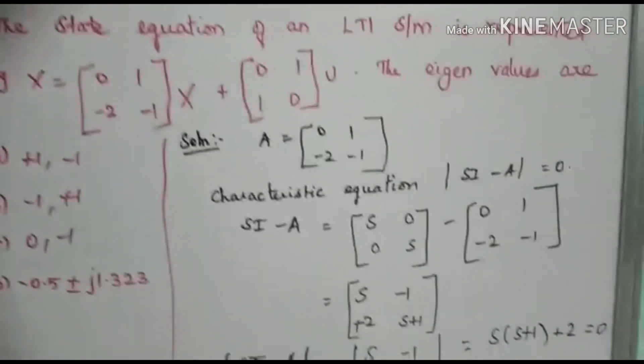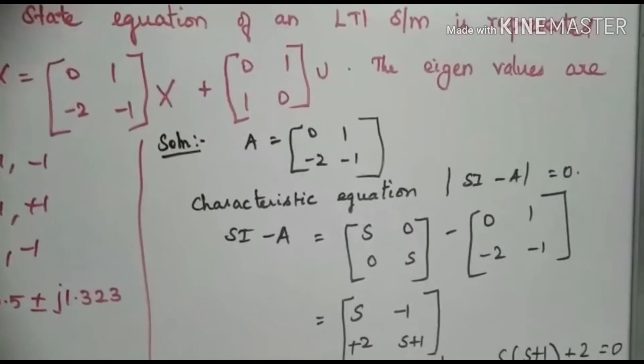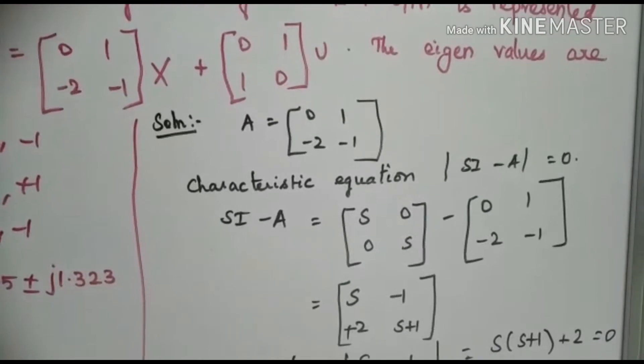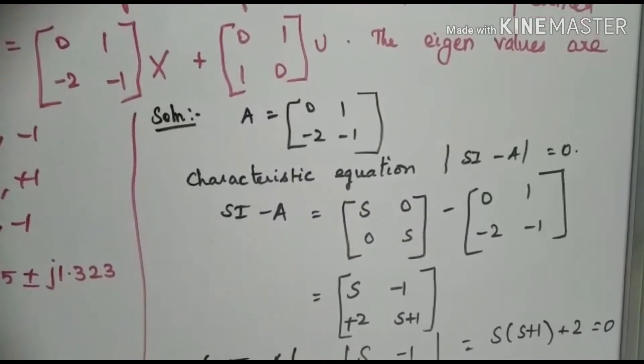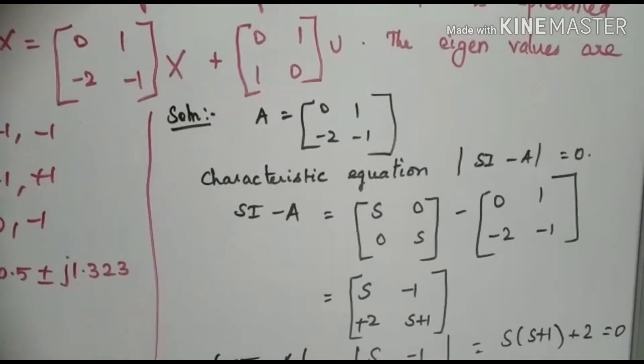First, let us consider the A matrix, that is [0, 1; -2, -1]. Already we know the characteristic equation, that is determinant of SI minus A equals zero.